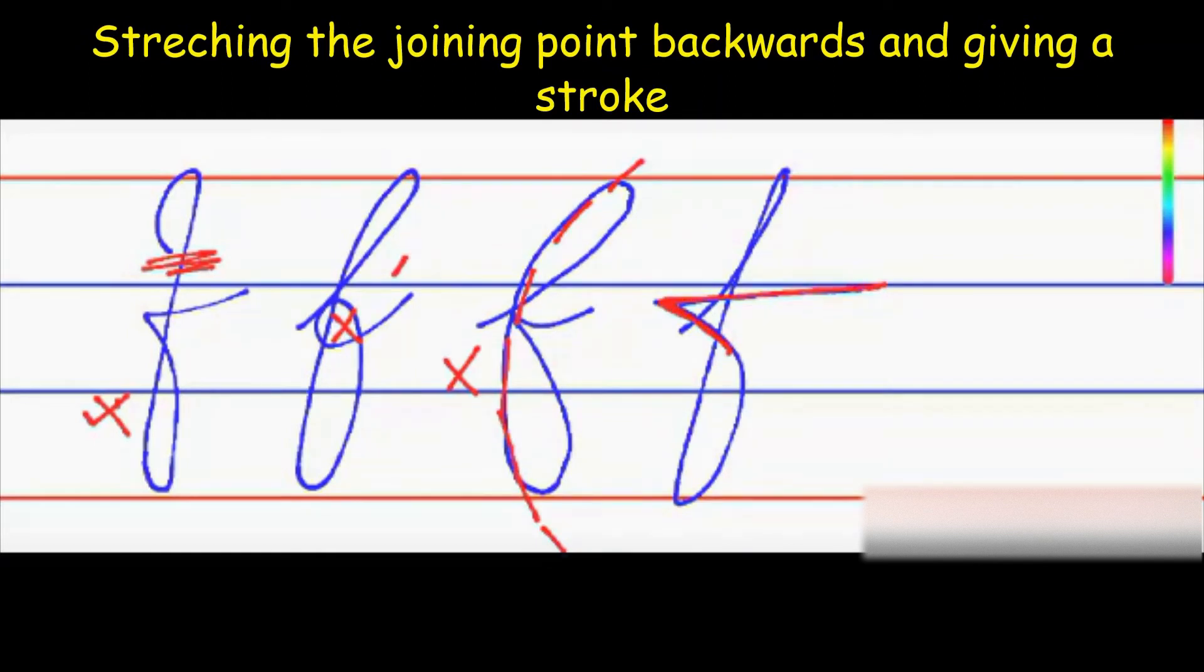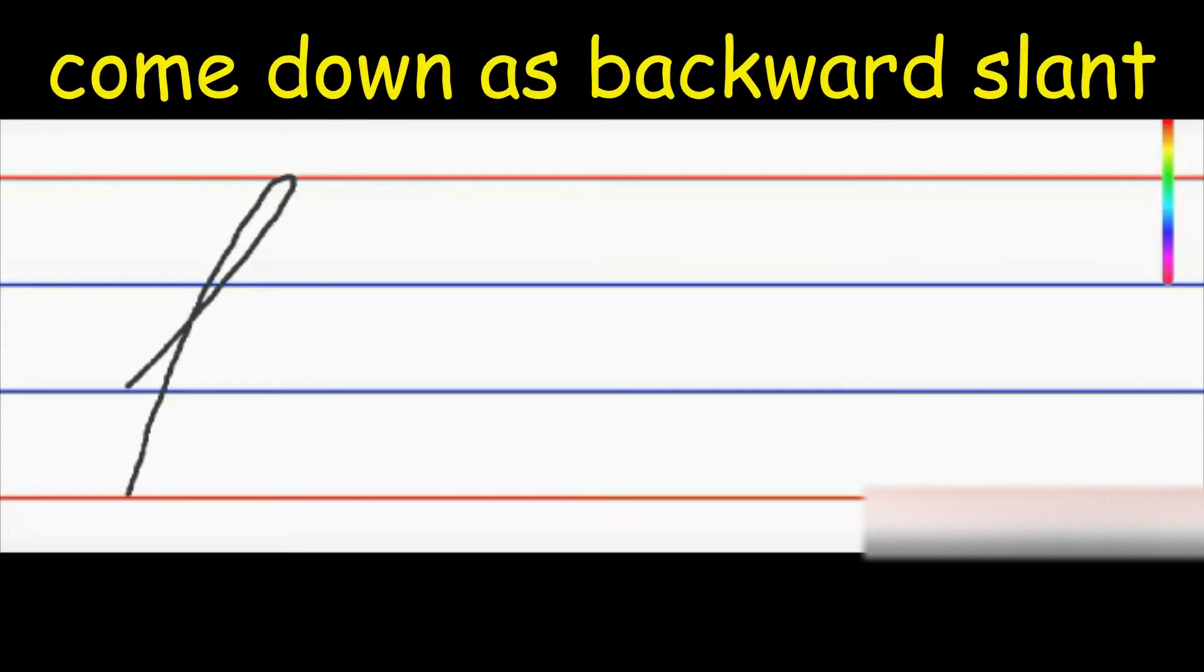So let us learn the perfect way of making f. Slant line till the red line, coming down just like l, crossing it over, going down slant. If you can observe, this line is going down slant, okay, till the red line.